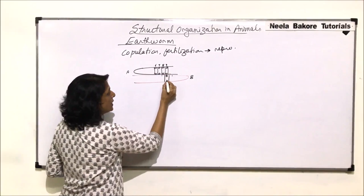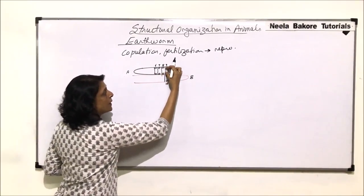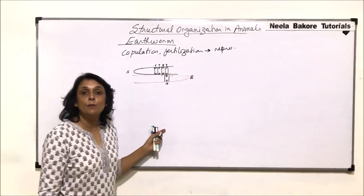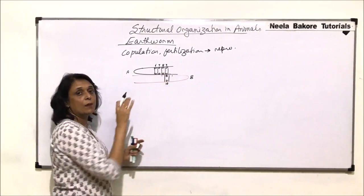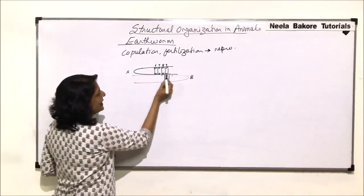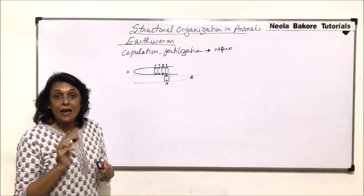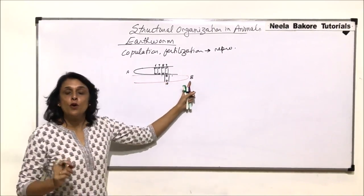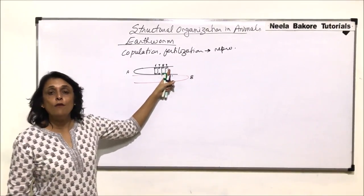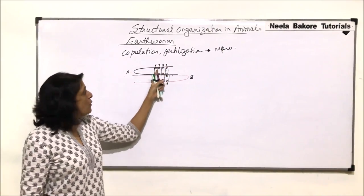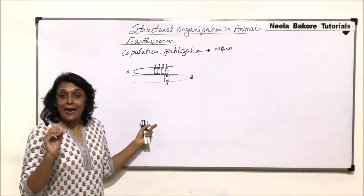From the 18th segment, through its male genital pore, the sperms are deposited. The male genital pores are also in pairs, so this paired opening lies on that paired opening and the sperms are released into the spermatheca. The sperms keep moving — next into the 8th, then the 7th, then the 6th segment. Now the sperms of worm B are deposited in the body of worm A.